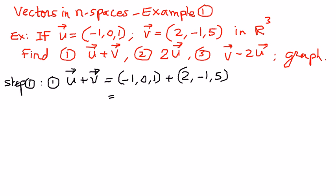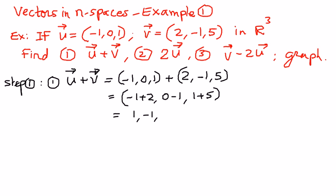The way we compute the sum of two vectors is by taking the first component of the first vector and adding it to the first component of the second vector, and so on. Negative 1 plus 2 gives the first component, 0 minus 1 gives the second component, and 1 plus 5 gives the third component. Simplifying: negative 1 plus 2 is 1, 0 minus 1 is negative 1, and 1 plus 5 is 6. So the sum of vector u and vector v is (1, negative 1, 6).